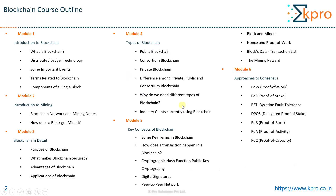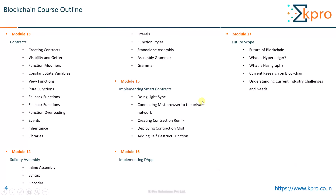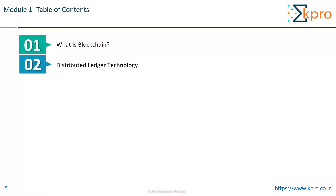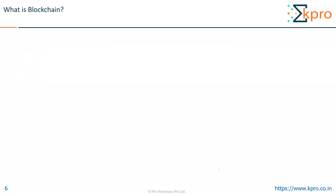These are basically the topics that we'll be covering in this entire series of blockchain videos. There are in total 17 modules. Now let us see the topics that we'll be covering in this video. They are: what is blockchain, distributed ledger technology, some important events regarding blockchain, terms related to blockchain, and what are the components of a single block.